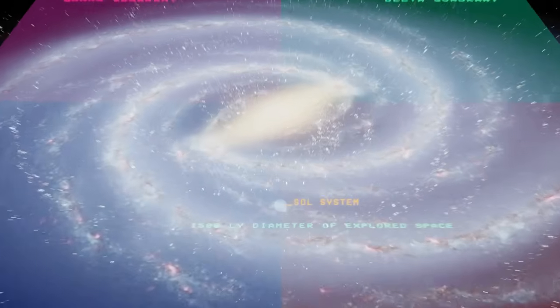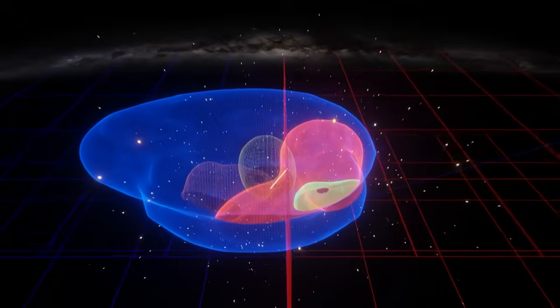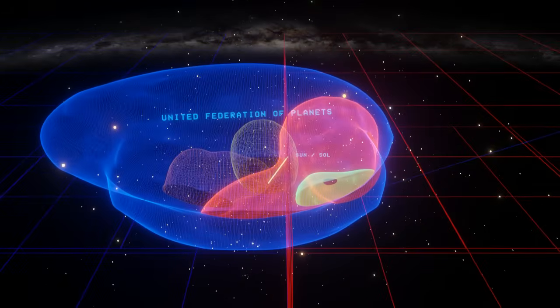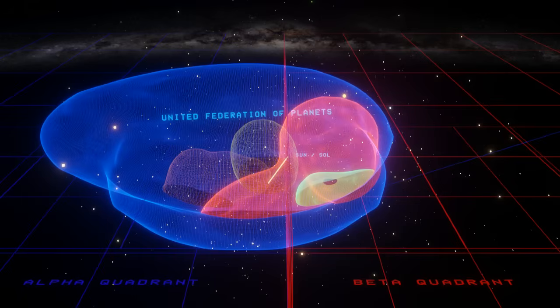But according to the maps, the coreward areas of the Federation are kind of squished in from various other interstellar powers, and the Federation expands towards the rim of the galaxy alongside the Klingon Empire.